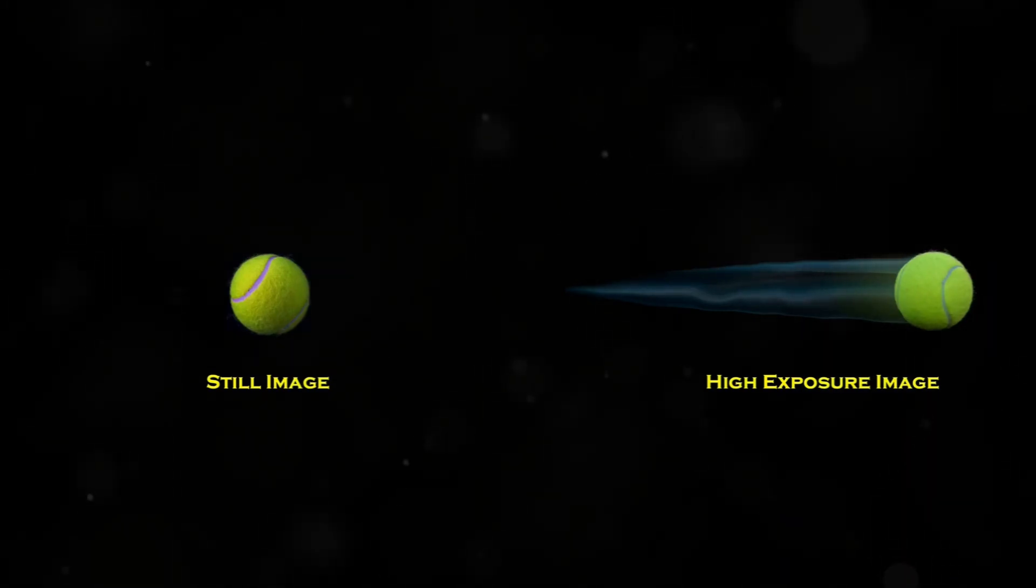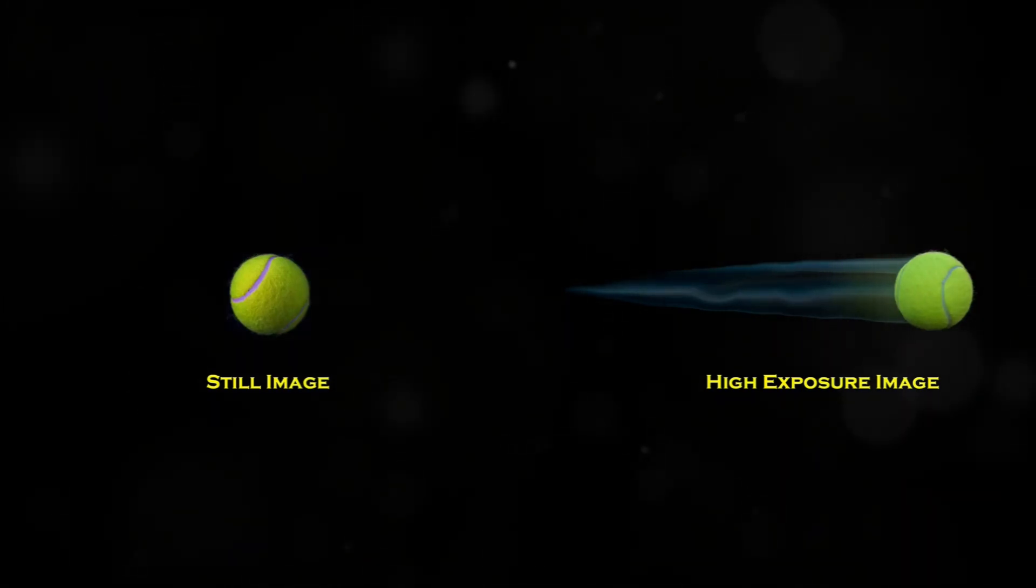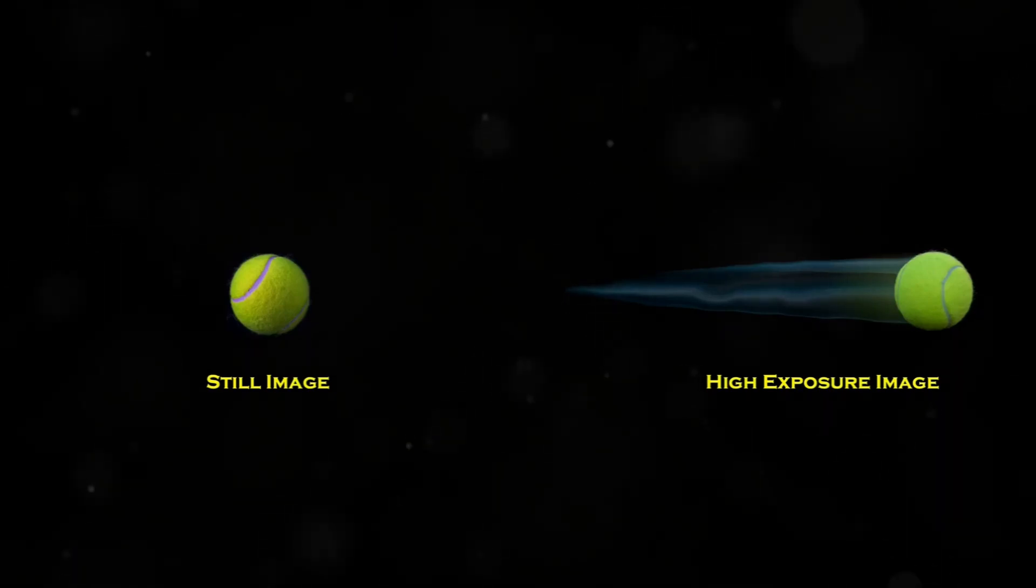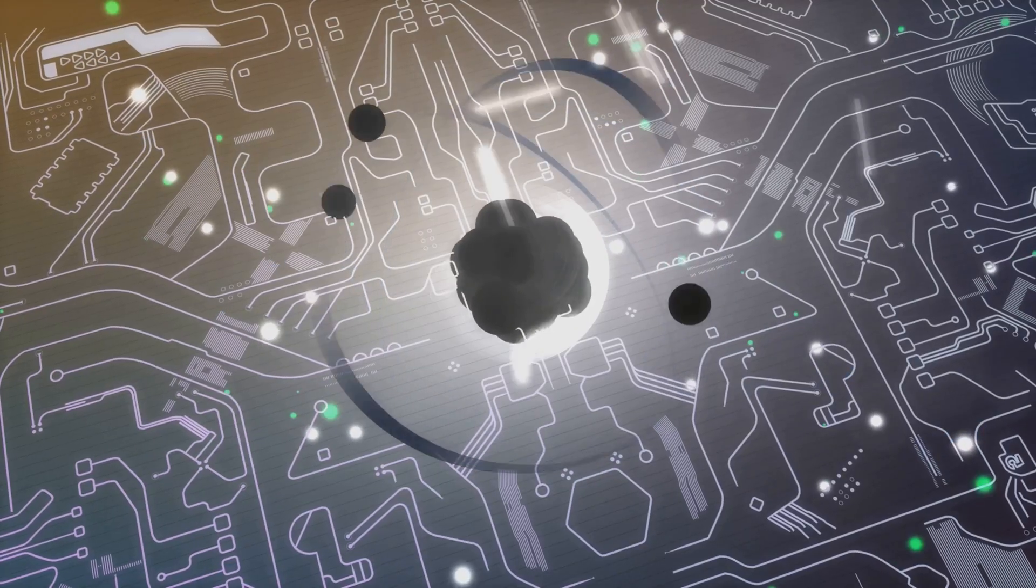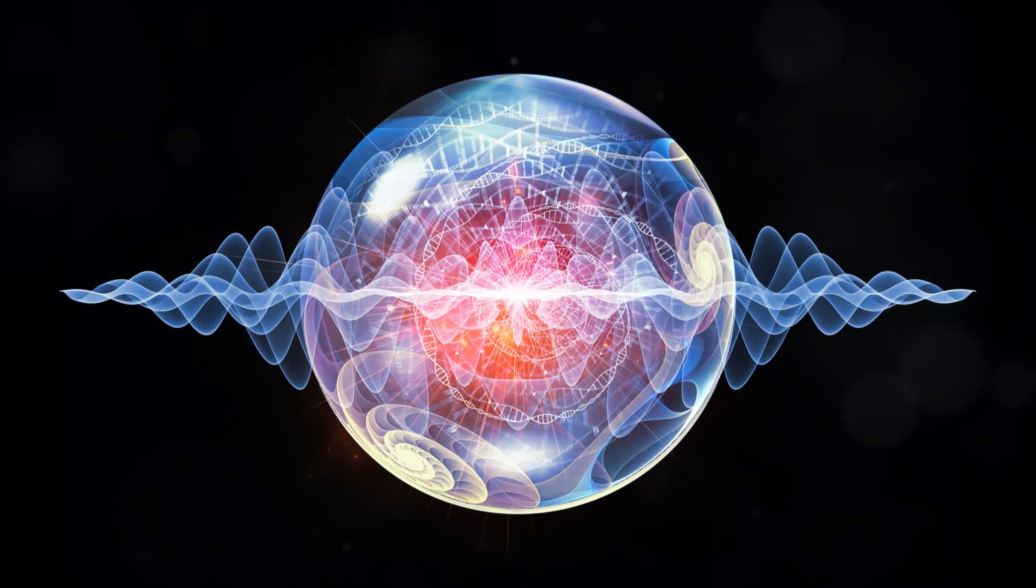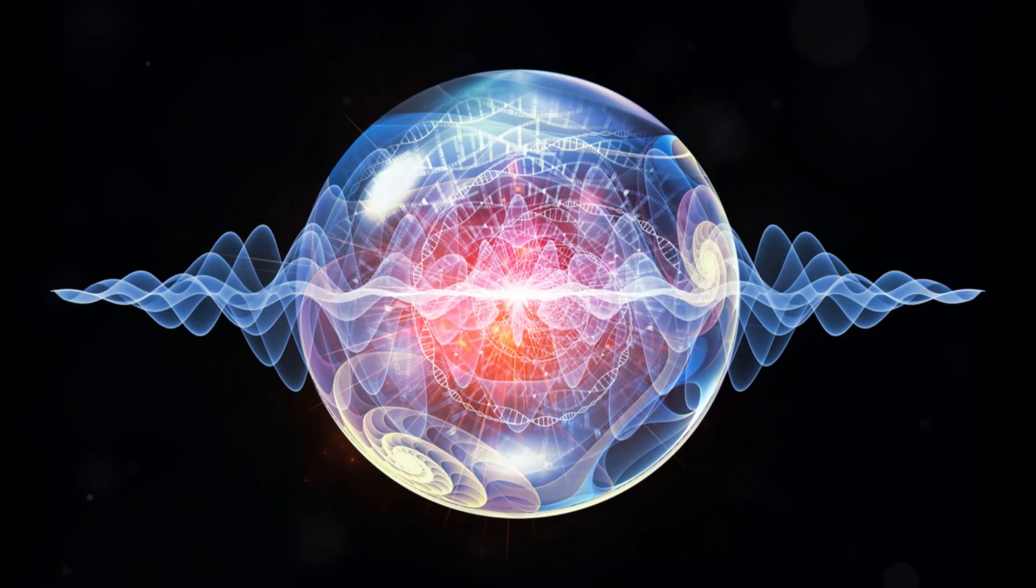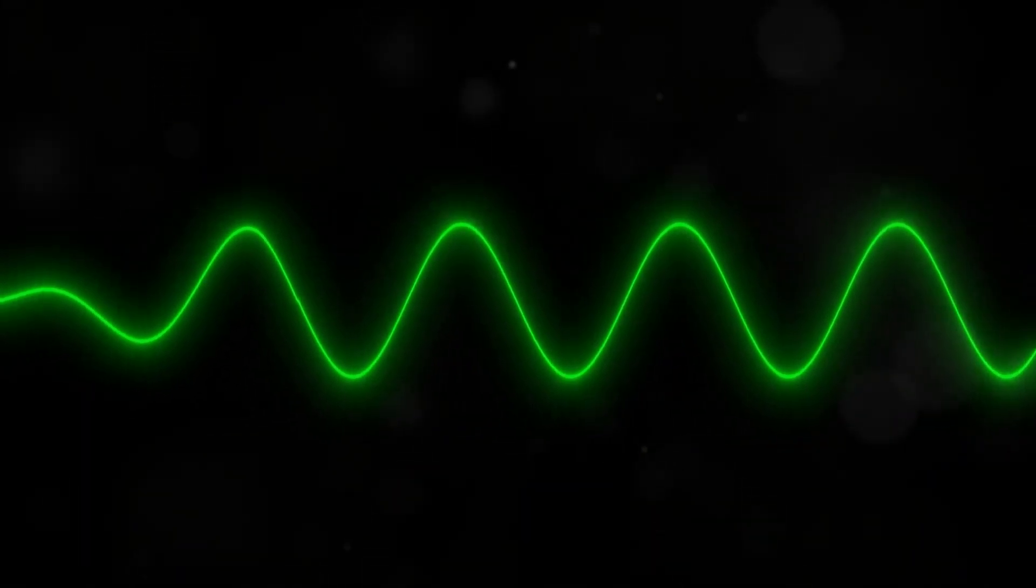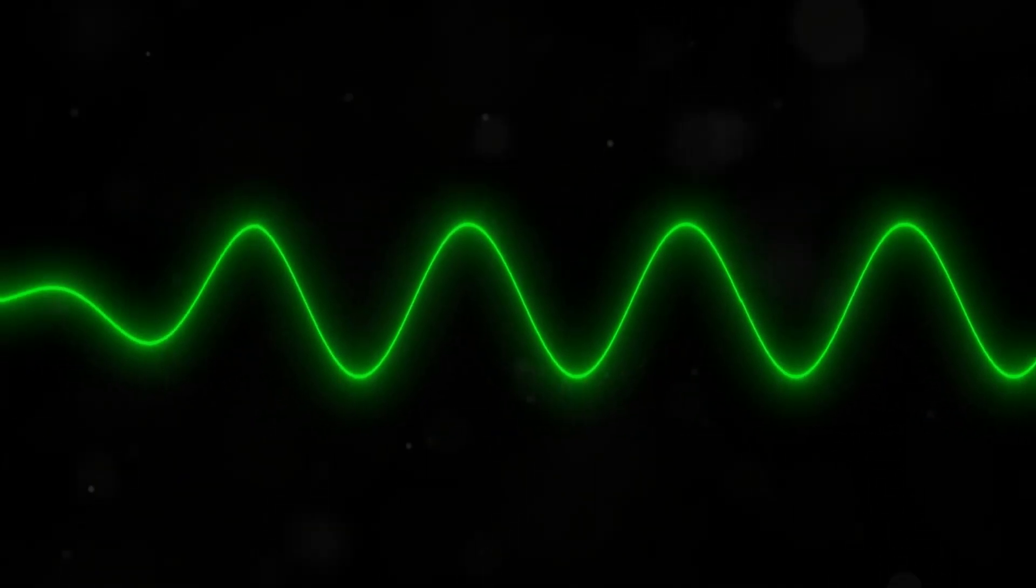This is like the uncertainty principle. When you measure one property very precisely, you lose accuracy in the other. This uncertainty is not just a minor quirk of quantum mechanics, it's deeply connected to the wave-particle nature of quantum systems. And to understand why, we need to go back to talking about waves again.